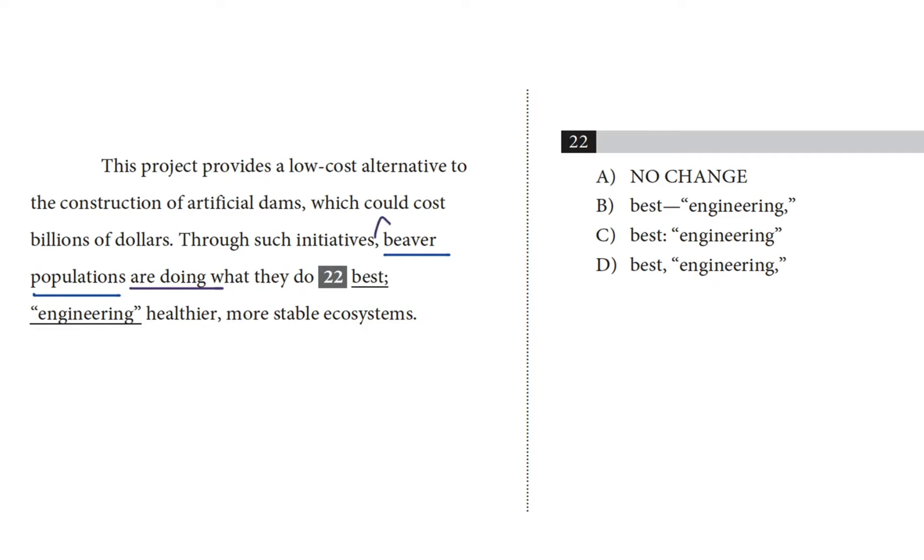But a semicolon can only be used to unite two independent clauses. So what's after the punctuation? Engineering healthier, more stable ecosystems. I don't see a subject or a main verb. Engineering here has no helper verb, so it's a participle, and that means we treat it like a noun. This isn't an independent clause. So that means if the semicolon is no good, we can safely knock out choice A.